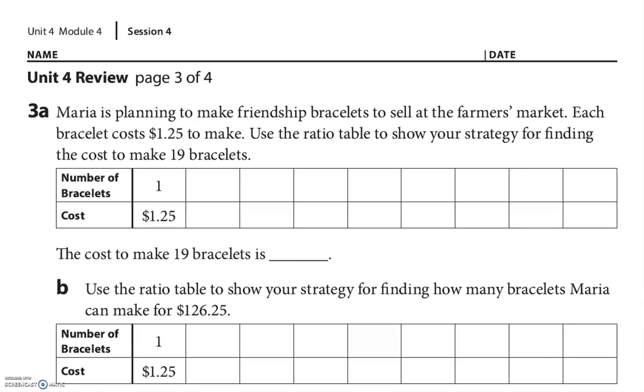This one, number 3a. Maria's making friendship bracelets she wants to sell. It costs her $1.25 to make them, so they want us to use a ratio table to figure out how much it is for 19 bracelets. They set up the first one for us.